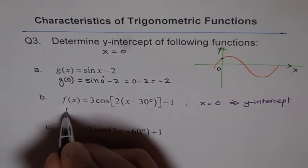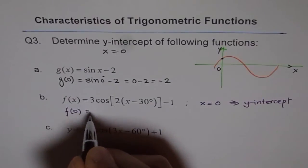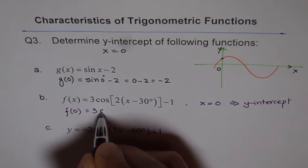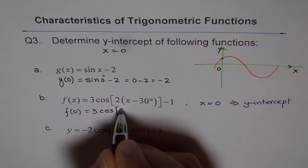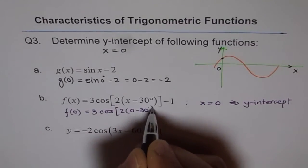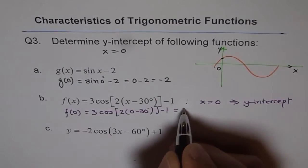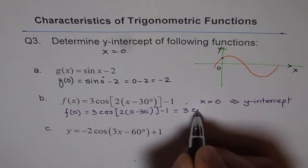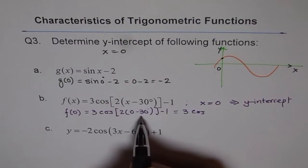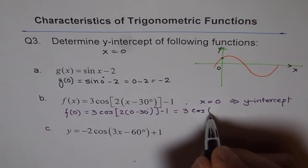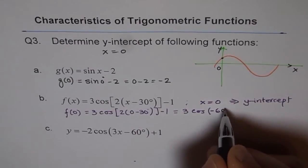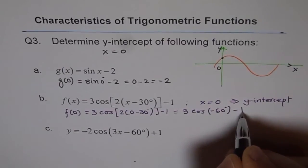Now, so that means we will plug in 0 for x and we should get y-intercept. So for this equation, it is cos of 2 times 0 minus 30 degrees minus 1, which is equals to 3 times cos of, so 0 minus 60 degrees, minus 60 degrees minus 1.